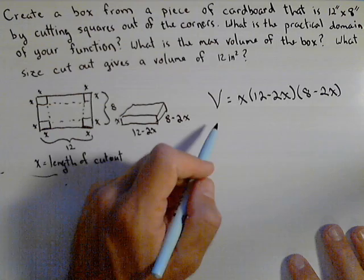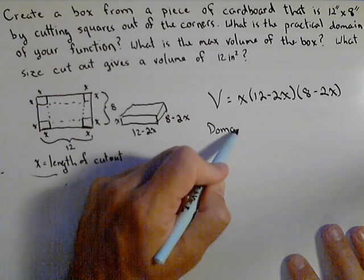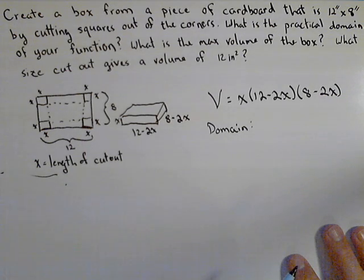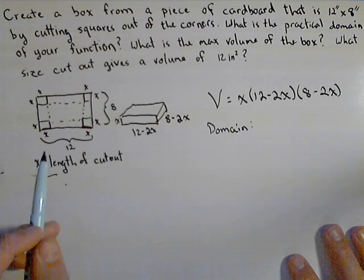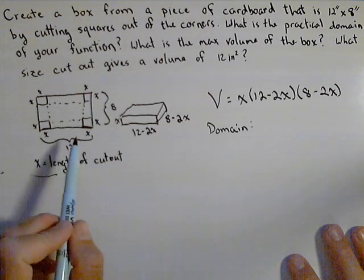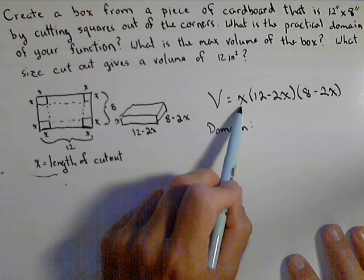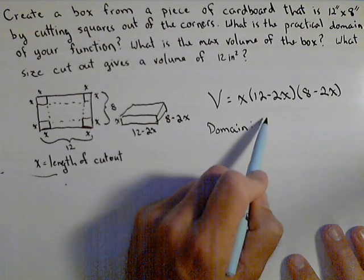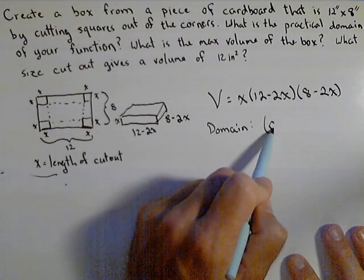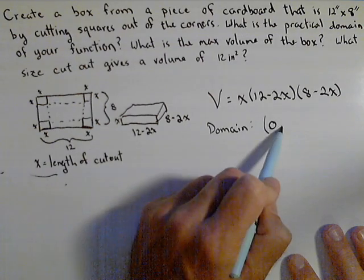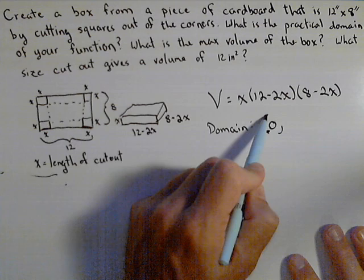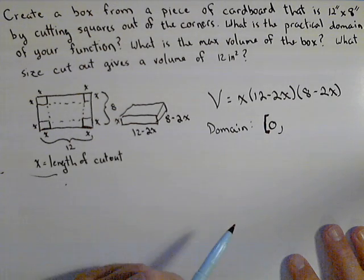Now the next thing that was asked for is a practical domain. Those are the values that make sense in the context of the problem. So first off, we don't want x to be negative. How could we have a negative cutout? Even a cutout of zero wouldn't give us a box, so the lower end of our domain has to be zero. You could use brackets for including, but that would give no box, that would just give the original piece of cardboard.